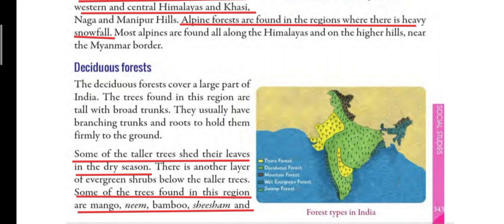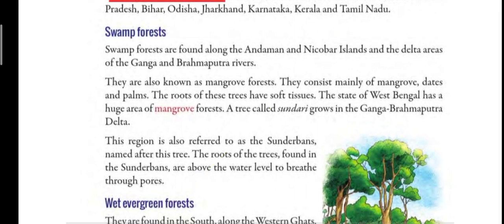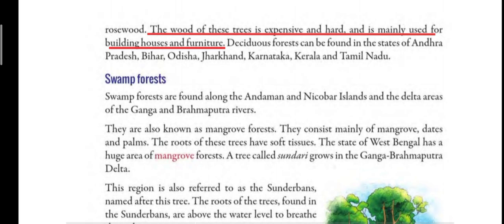Some of the taller deciduous trees shed their leaves in the dry season — this is an important feature of deciduous forests. There is also another layer of evergreen shrubs below the taller trees. Examples of deciduous trees include mango, neem, bamboo, shisham, and rosewood.